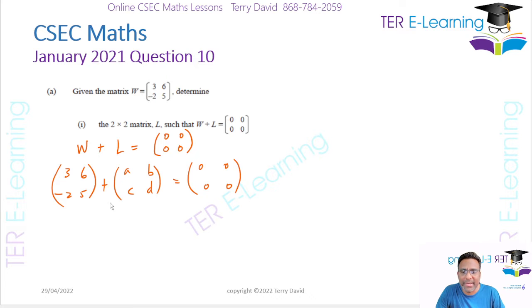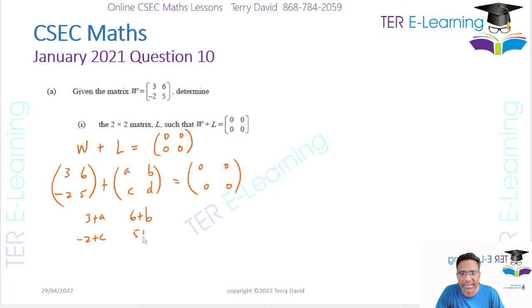When you add everything on the left side, you're going to get [3+A, 6+B; -2+C, 5+D], and all of that is equal to [0, 0; 0, 0].